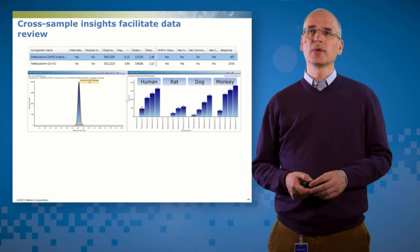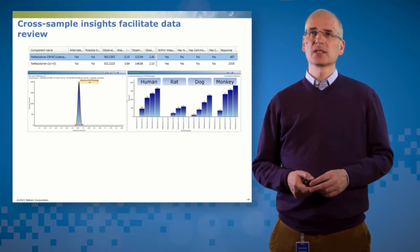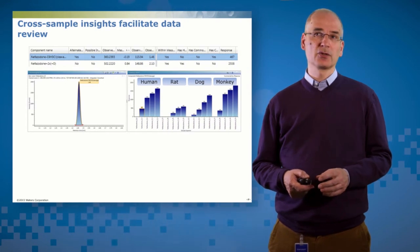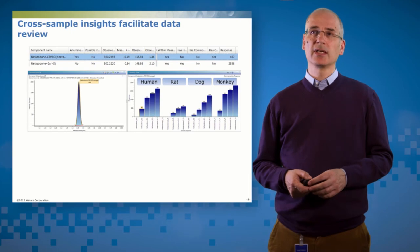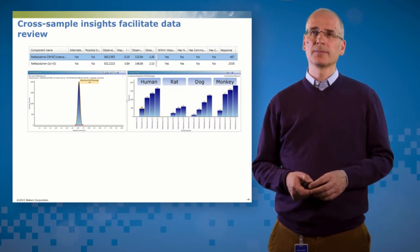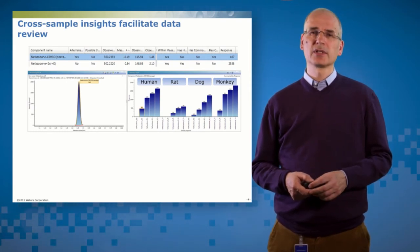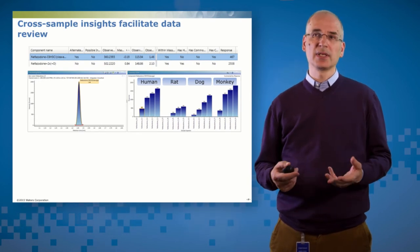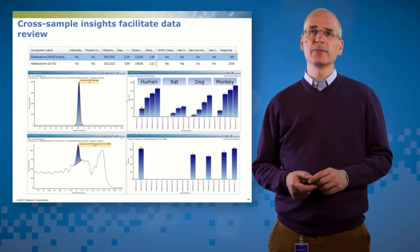So in this sample, it's a cross-species comparison. I've got human, rat, dog and monkey incubations done at four different time points, plus the T0 control. And you can see for this metabolite, I have a temporal response and a species dependency. So that says to me, yes, this is very likely to be a real metabolite.